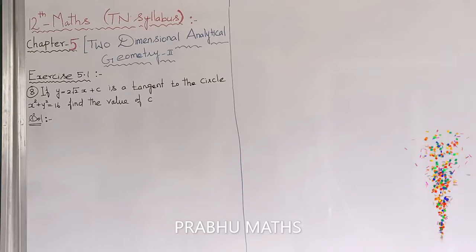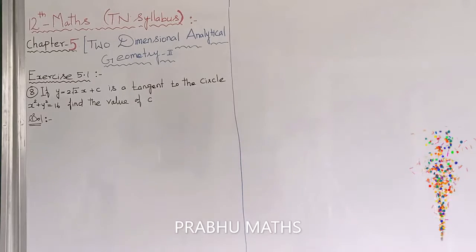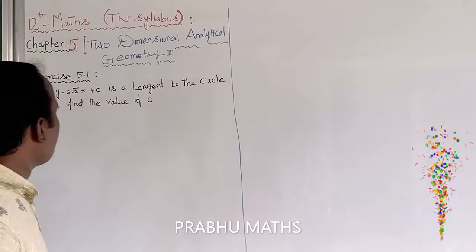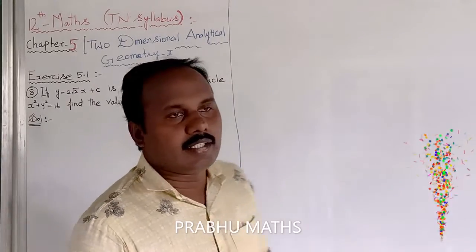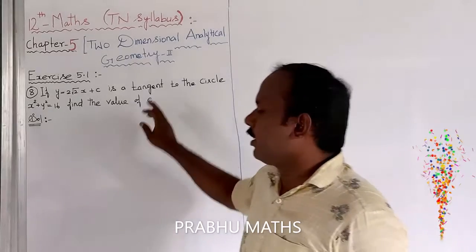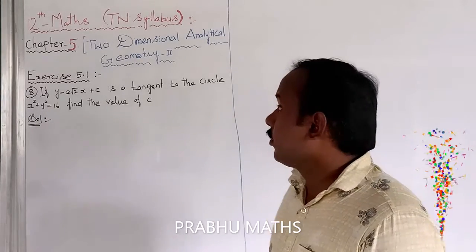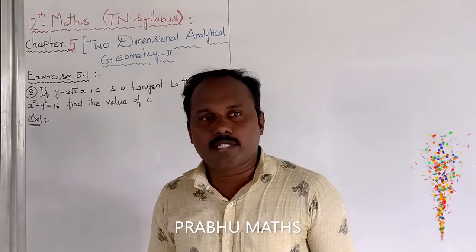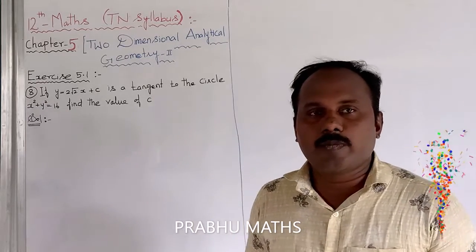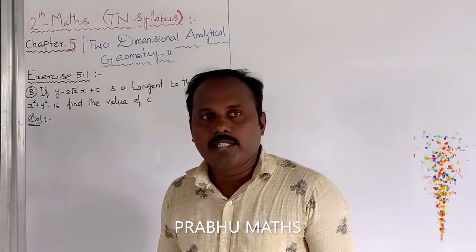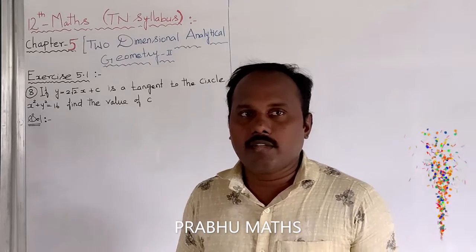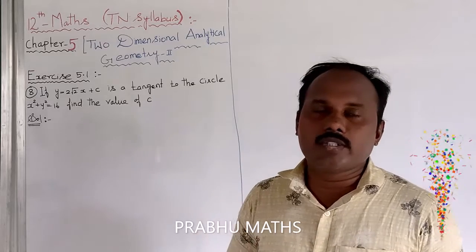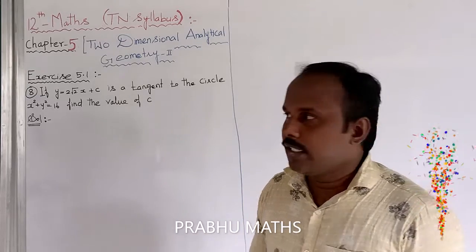Exercise 5.1A: if y = 2√2·x + c is a tangent to the circle x² + y² = 16, find the value of c. The condition for a line y = mx + c to be tangent to the circle x² + y² = a² is: c² = a²(1 + m²). That is the formula.